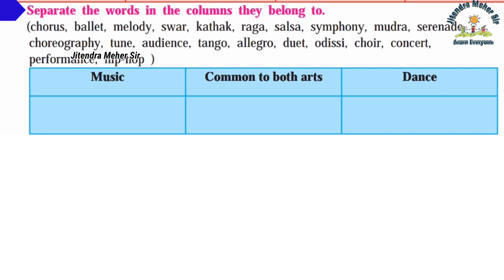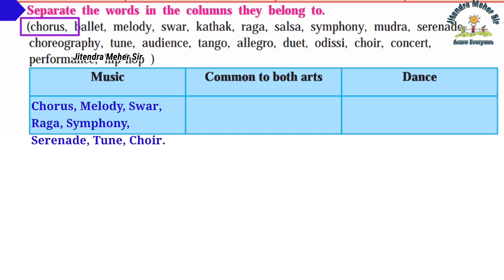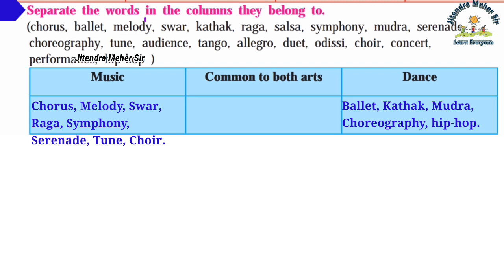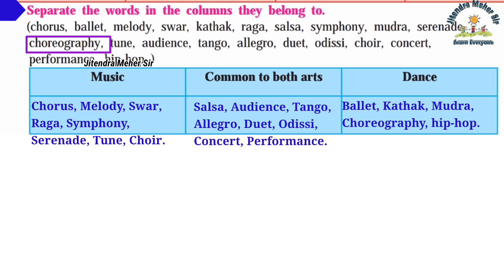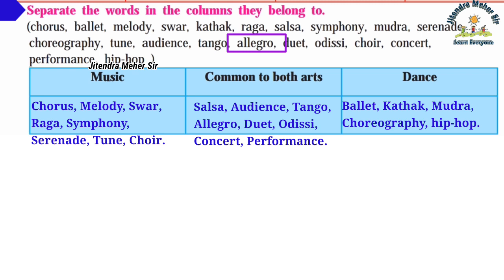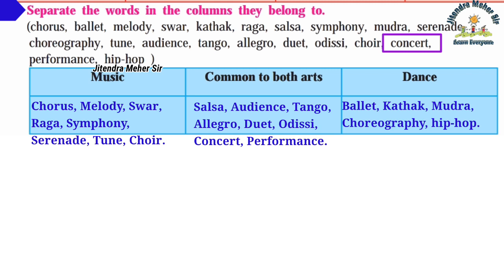Activity three: separate the words into the columns they belong to. Chorus — music; ballad — music; melody — music; swar — music; kathak — dance; rag — music; salsa — common to both; symphony — music; mudra — dance; serenade — music; choreography — dance; tune — music; audience — common to both; tango — common to both; allegro — common to both; choir — music; concert — common; hip-hop — dance.